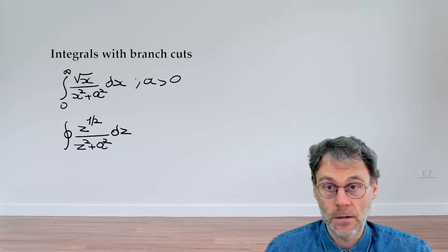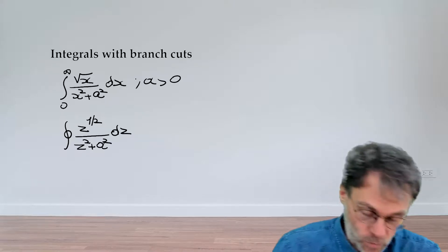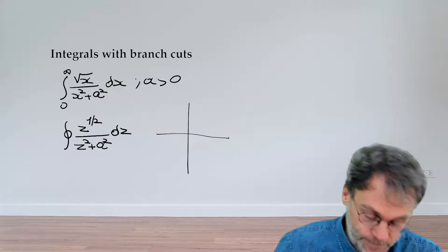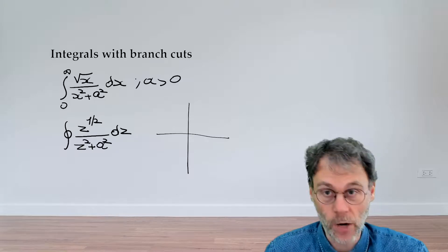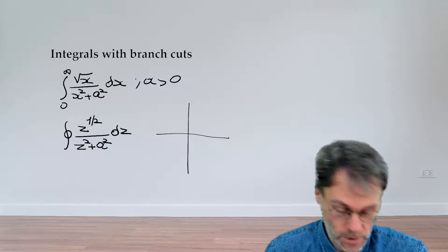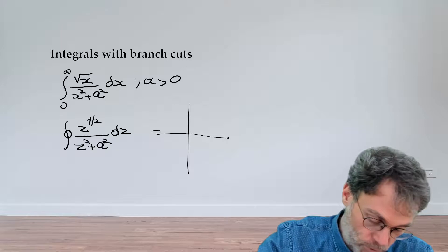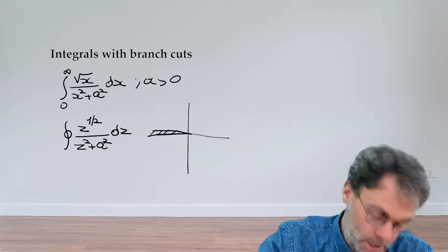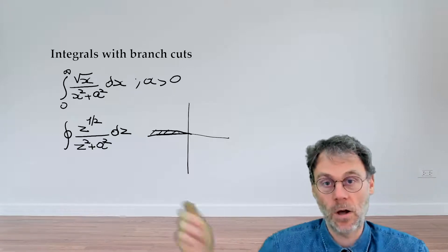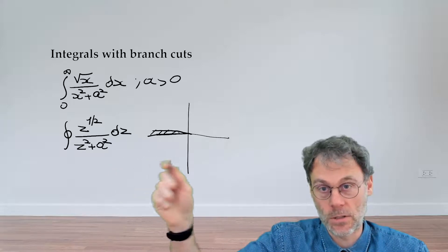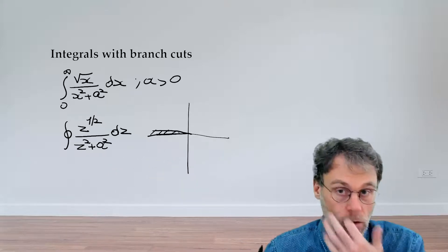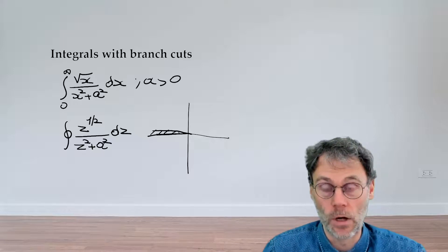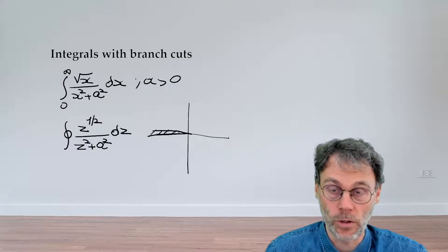The next ingredient is figuring out what the contour should be. In this particular case, we need to be wary of that complex square root, which conventionally has a branch cut along the negative real axis. This part of the complex plane we should stay away from, because there the function is no longer holomorphic and all our theorems would stop working.